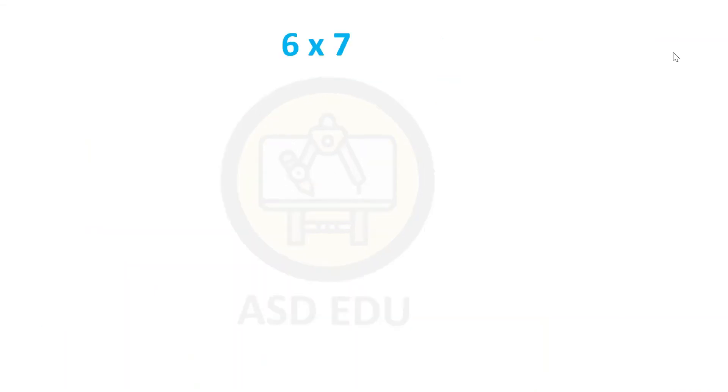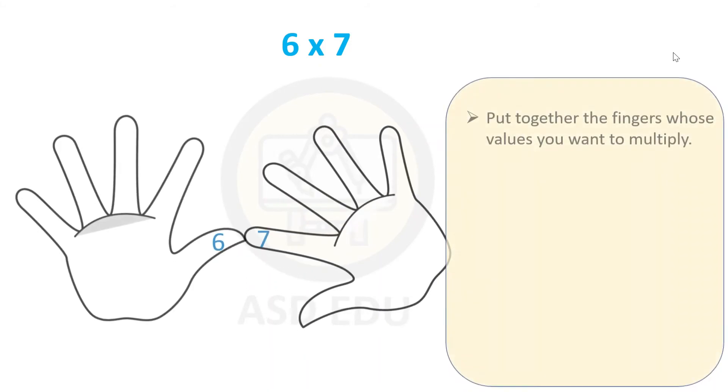Let's do another example, 6 times 7. Put together the fingers whose values you want to multiply.